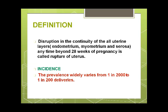Uterine rupture is a disruption in the continuity of all uterine layers — endometrium, myometrium, and serosa — at any time after 28 weeks of pregnancy. The incidence varies widely from 1 in 200 to 1 in 2,000 deliveries, because in developing countries grand multiparity, unsupervised trials of labour, and injudicious use of oxytocic agents all lead to this catastrophic event.